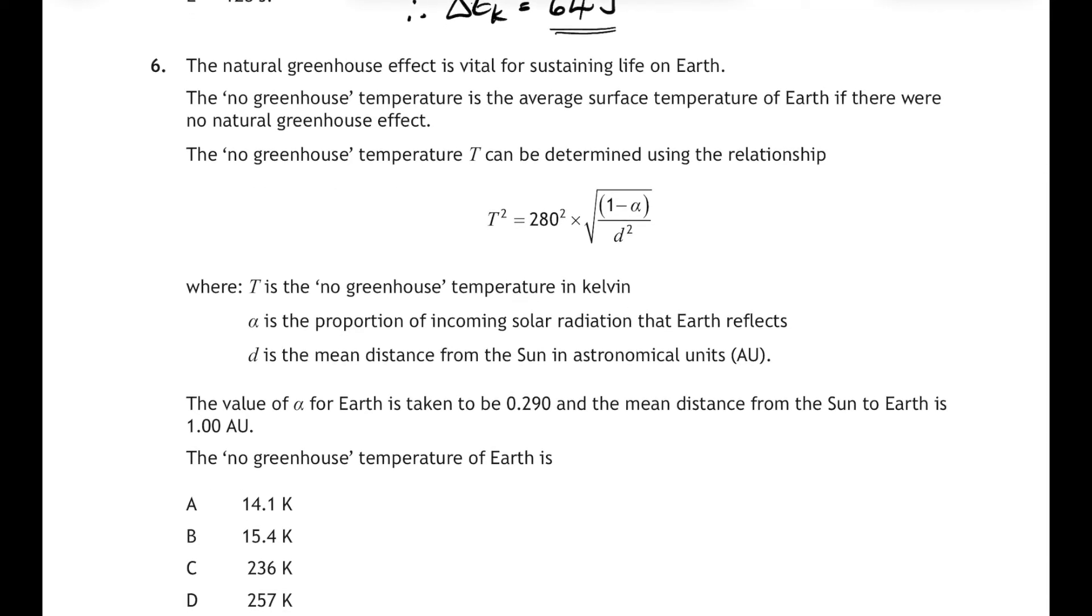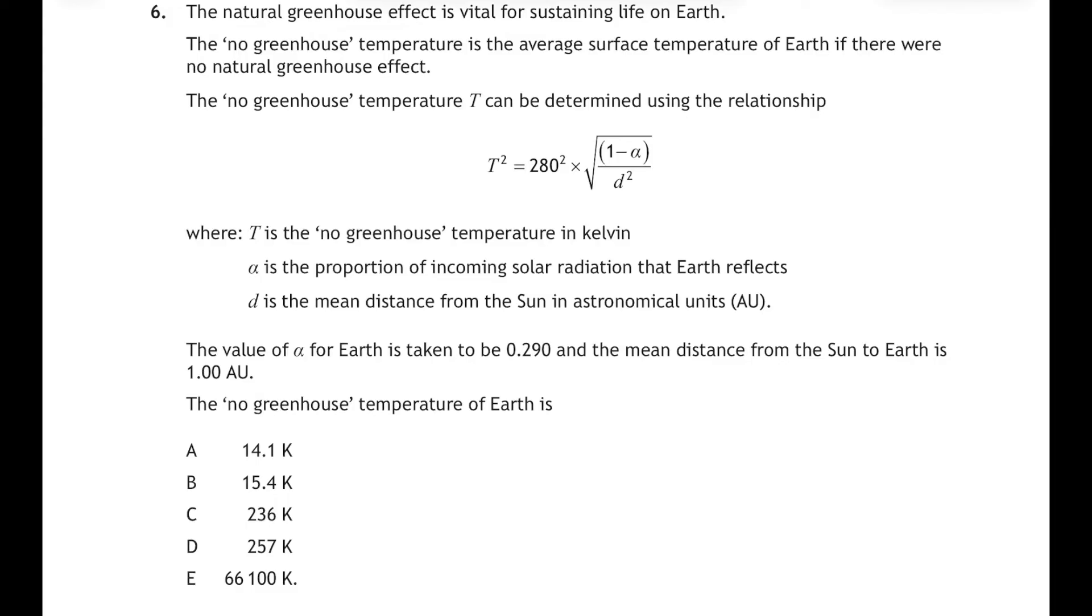Right, question six. Question six is a relationship you have never seen before in your life, and with this type of question, all you have to do is substitute the numbers that you're given into the relationship and work out the unknown quantity. And in this case, we have to work out capital T, the no greenhouse temperature of the earth. So looking at the relationship, we have to find a number to sub in for the symbol alpha and for the symbol small d. And we're told in the second last line of the question, the value for alpha for earth is 0.29. Now that's the proportion of incoming solar radiation that the earth reflects, but we're just going to sub the number in: 0.290 for alpha.